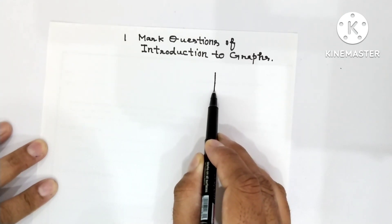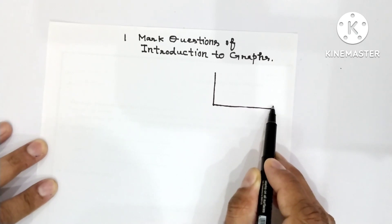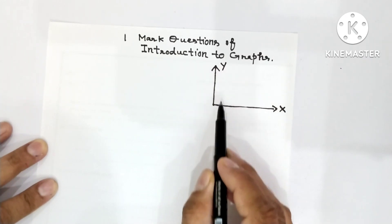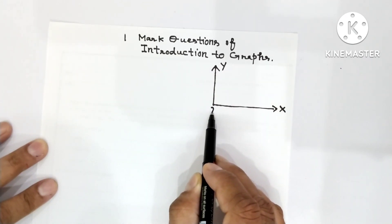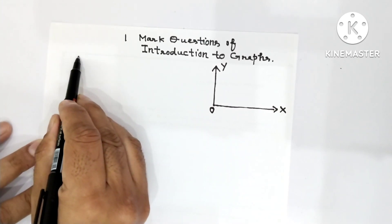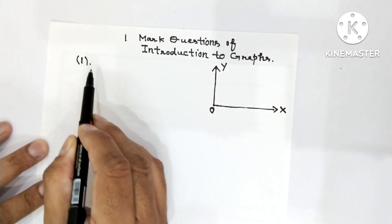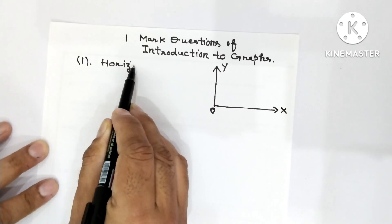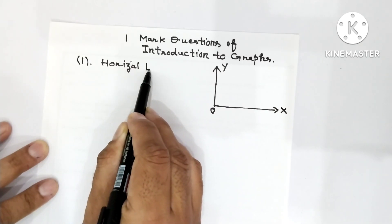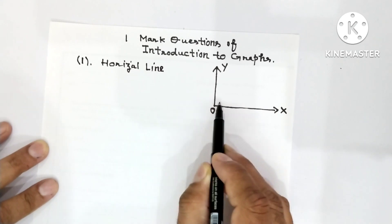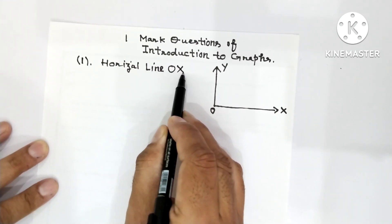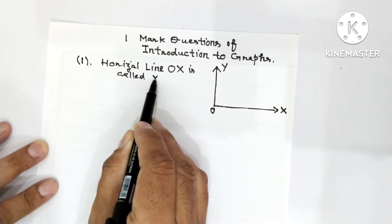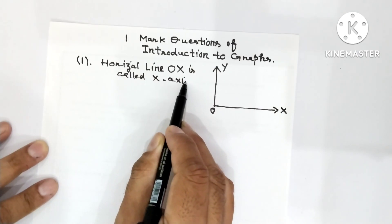See here, I have drawn the X-axis and this is the Y-axis. The point at which both the axes meet is called the origin. The horizontal line OX is called the X-axis.